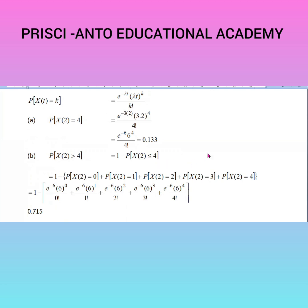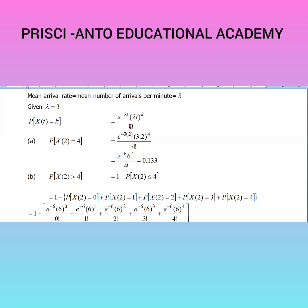We have to take all values from 0 up to 4. So, 1 minus [probability X(2)=0 plus probability X(2)=1 plus probability X(2)=2 plus probability X(2)=3 plus probability X(2)=4]. Using the formula e to the power minus lambda*t times (lambda*t) to the power k divided by k factorial, this becomes e to the power minus 6 times 6 to the power k divided by k factorial.